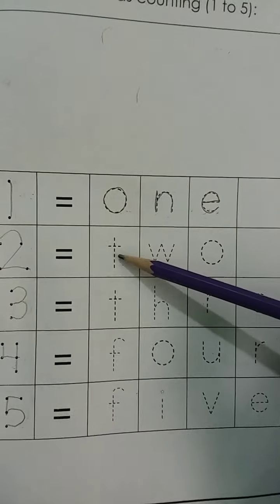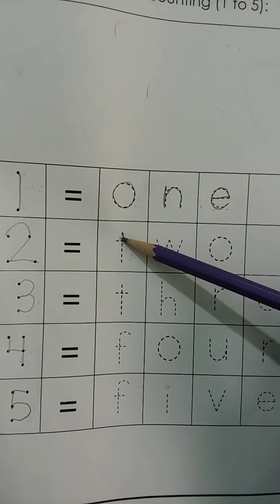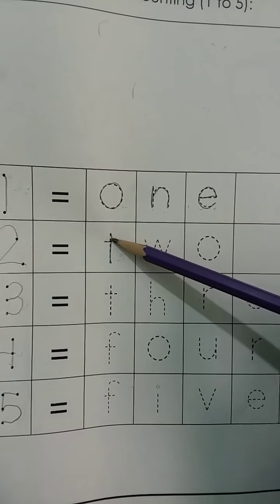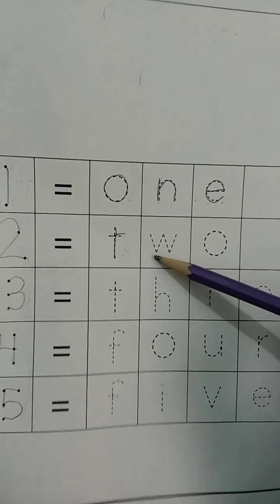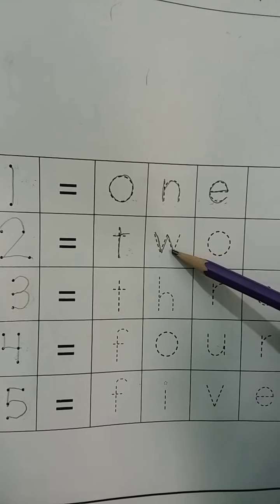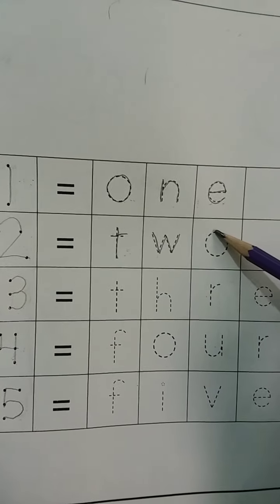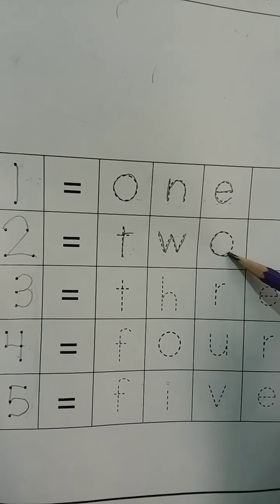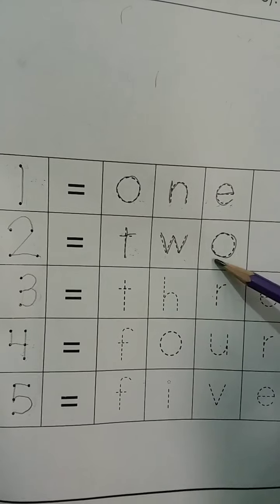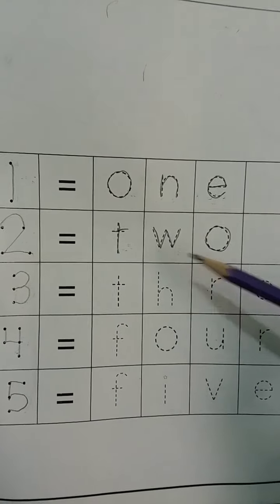Come to the next. What is this? This is T. Now trace T with the help of pencil like this. Read with me: T, W, O, 2.